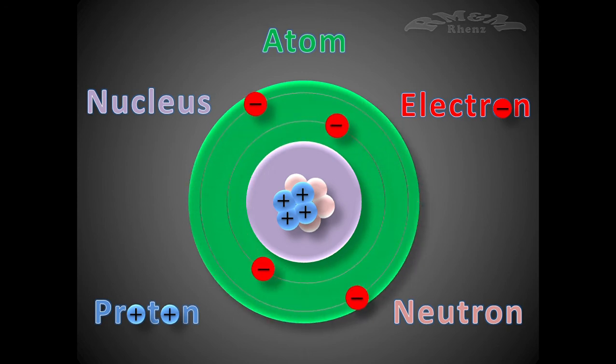When the number of protons in a nucleus equals the number of electrons orbiting the nucleus, the atom is electrically neutral.